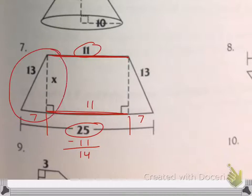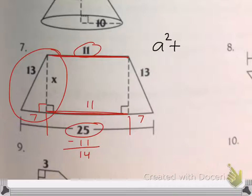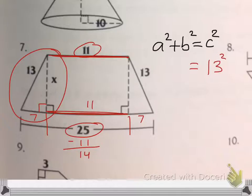And now we've got a right triangle so we can do the Pythagorean theorem. And we've done it about 50 million hundred times. But just in case, we'll plug it in for you so you're sure you know what to do. C is 13 — the long side is C. And the short sides make up x squared plus 7 squared.